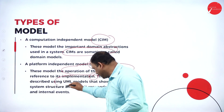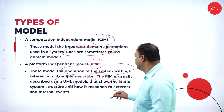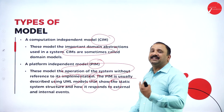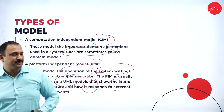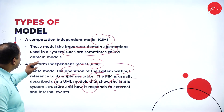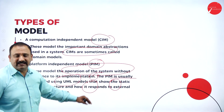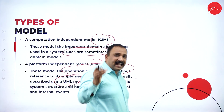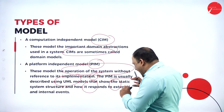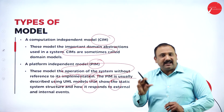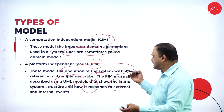The Platform Independent Model, or PIM, is usually described using UML models, showing the static system structure and how it responds to external and internal events. The system models the operation without reference to its implementation, meaning it runs independently — the models are available and will start working and responding on their own.